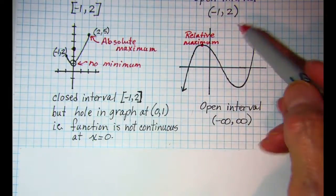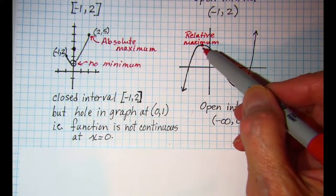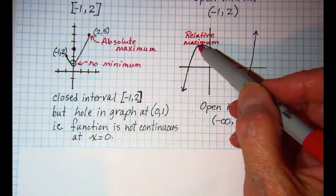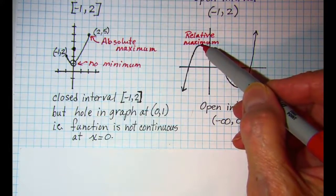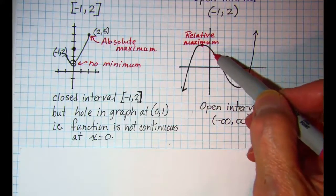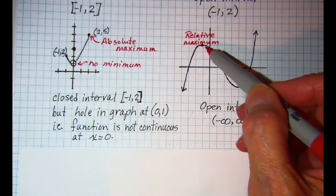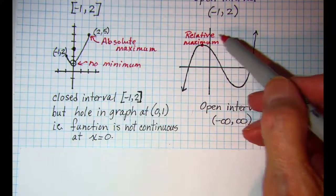So whenever we talk about a relative max we're talking right around that neighborhood. If you put a little circle right around that point, then you're comparing that point to other points that are in that circle. And the other points would have a y value that's slightly less than that one. So it is a relative max.